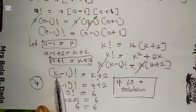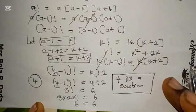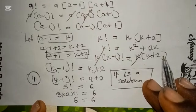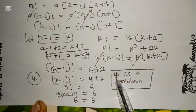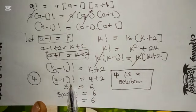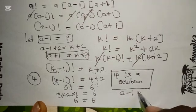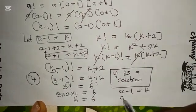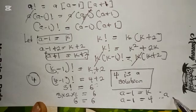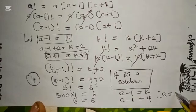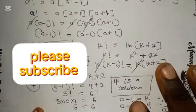Going back, we said a minus one equals k, and k equals four. So a minus one equals four, which means a equals four plus one, therefore a equals five.